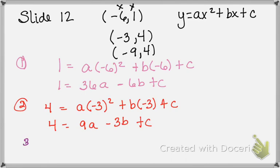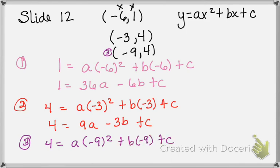Then we're going to make an equation with the third one. So for equation three, we're using this point: 4 is equal to a times negative 9 squared plus b times negative 9 plus c. We simplify and get 81a minus 9b plus c equals 4. Now I'm going to rewrite these three equations on the next page and use elimination or substitution to start solving for a, b, and c.